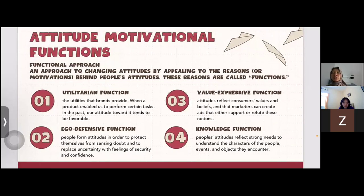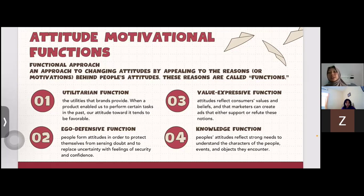Next is the attitude motivational function — a functional approach to changing attitudes by appealing to the reason or motivation behind people's attitudes. These reasons are called functions. The first is the utilitarian function: the utilities that a brand provides. When a product enables us to perform certain tasks in the past, our attitudes toward it tend to be favorable. The second is the ego defensive function, where people form attitudes in order to protect themselves from sensing threat.